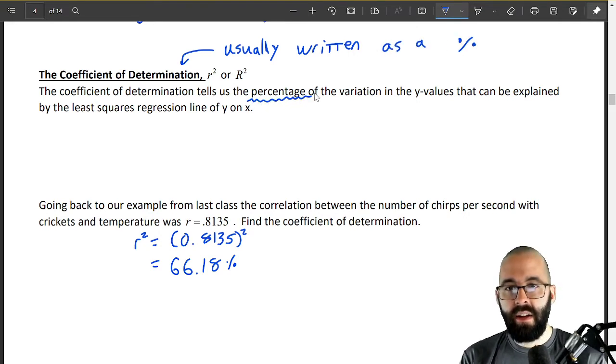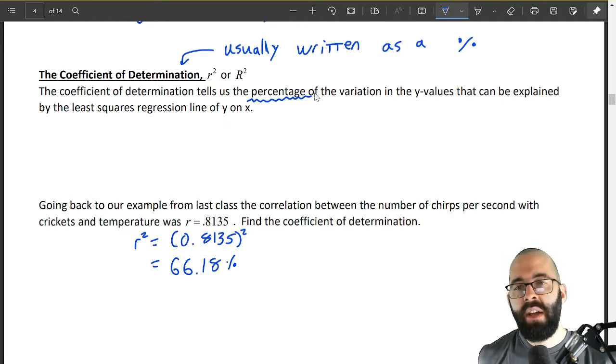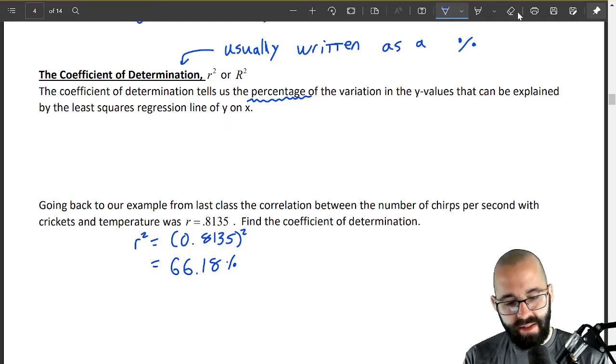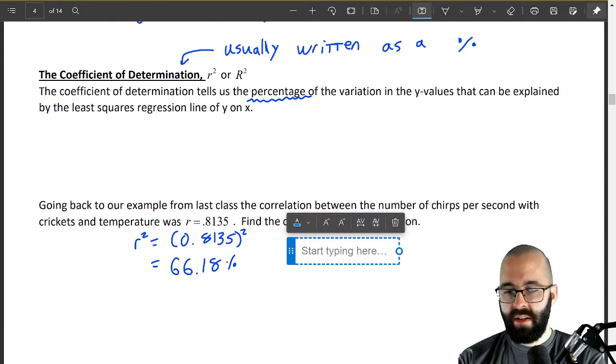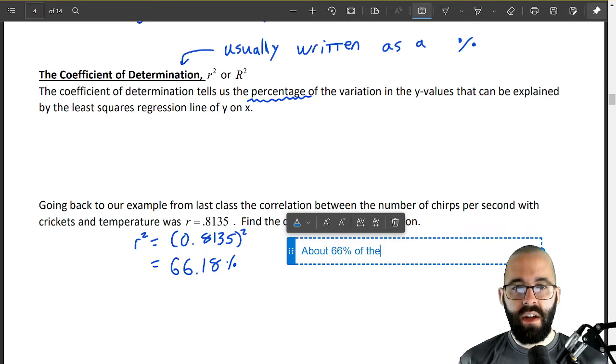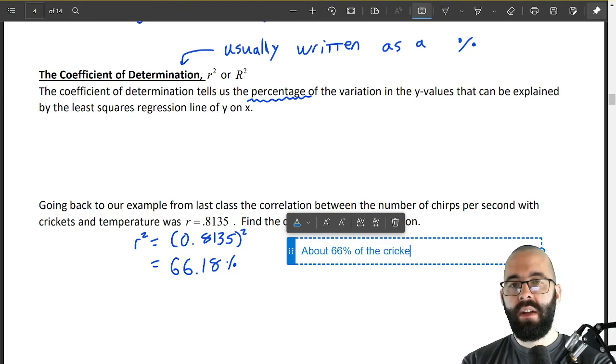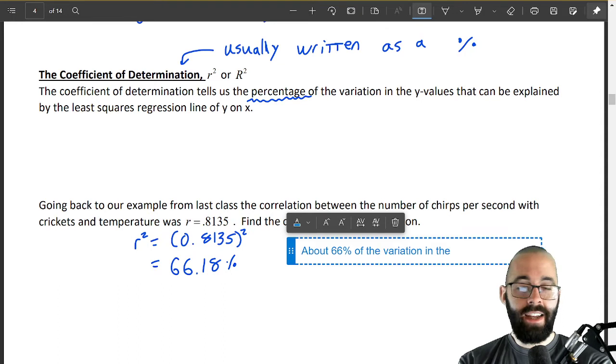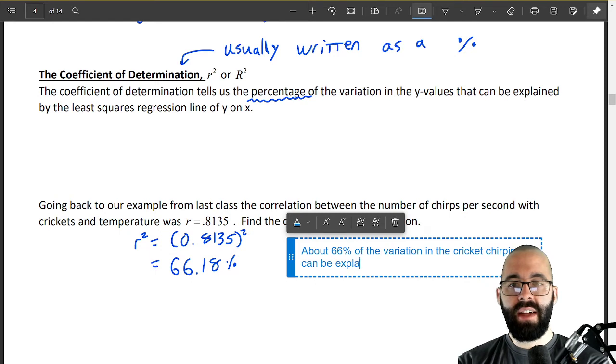As a side note this coefficient of determination is usually written as a percent. It tells us the percentage of the variation that can be explained. So we'll say that about 66 percent, let's write this out as an explanation. About 66 percent of the variation in y, what is y here, y was chirps per second. About 66 percent of the cricket or the variation in the cricket chirping can be explained by the temperature x.